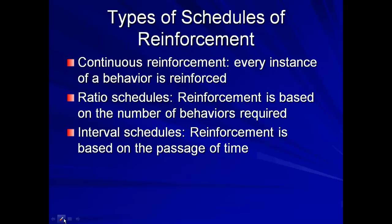First you have continuous reinforcement, and that's where every instance of a behavior is reinforced — every time the desired behavior is done, there is a pleasant consequence. There are ratio schedules, and that's where the reinforcement is based on the number of behaviors required — every third, sixth, fourth, or tenth — a predetermined number of behaviors must occur before reinforcement is given.